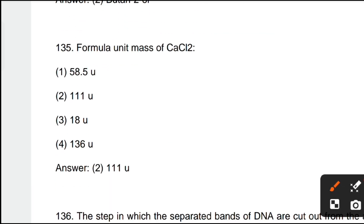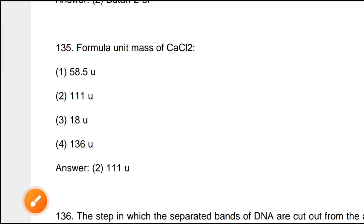Next question: the formula unit mass of CaCl₂ (calcium chloride). Option 2, 111 atomic mass units, is the correct answer.